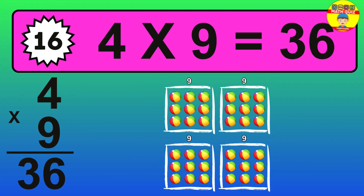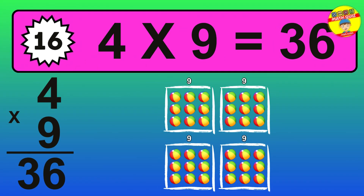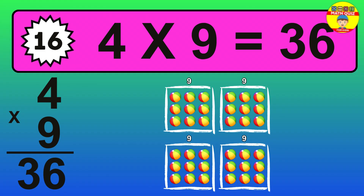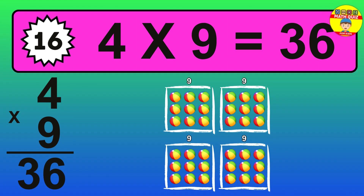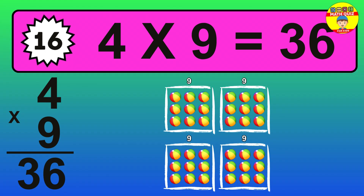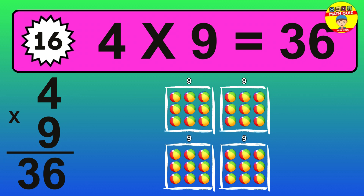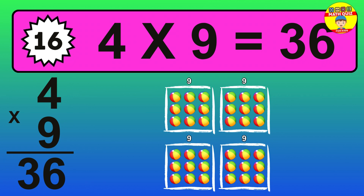The answer is 4 times 9 is 36. To calculate, we have 4 groups with 9 balls each one. So, how many balls do we have? 36 balls.